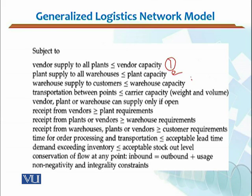The fourth constraint is that transportation between points should be less than or equal to the carrier capacity in terms of weight and volume. Your carrier capacity in terms of weight and volume cannot be exceeded — whatever cargo you are sending between points cannot be more than the carrier's capacity in weight and volume.